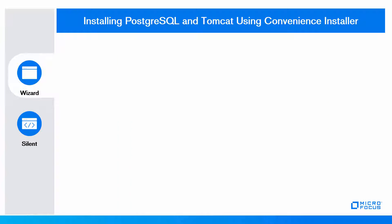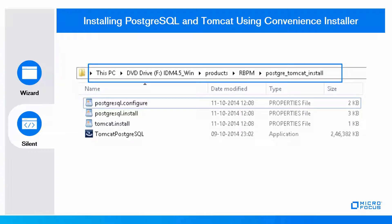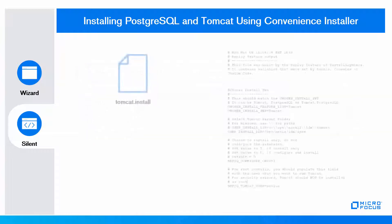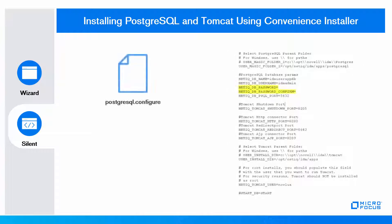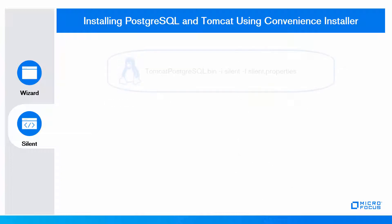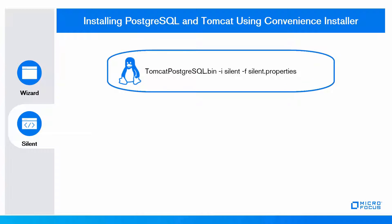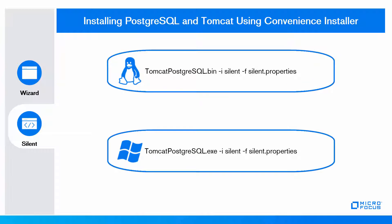Now let us perform a silent installation of these components. Find the silent properties file in the specified path. Ensure the paths and IP addresses are specified in the Tomcat.install file. Specify the required paths, IP addresses, and NetIQ DB password in the PostgreSQL.configure file. If you are installing on a Linux machine, use the Linux command; for Windows installation, use the Windows command.